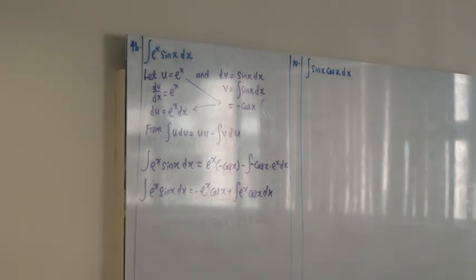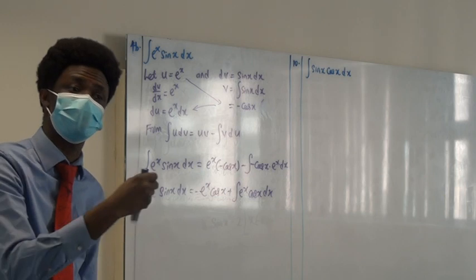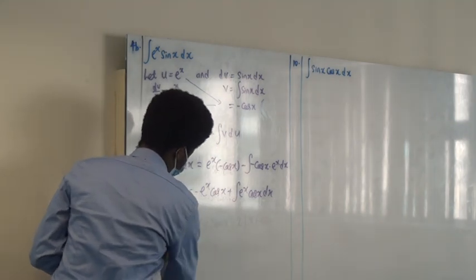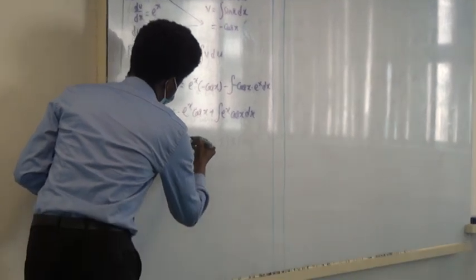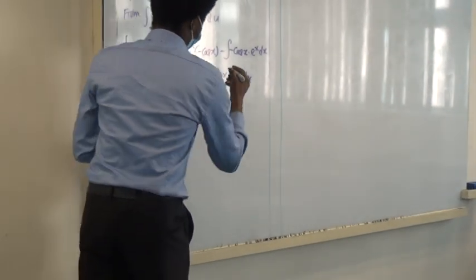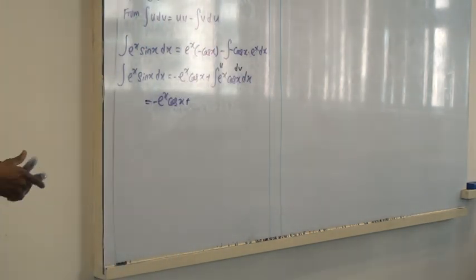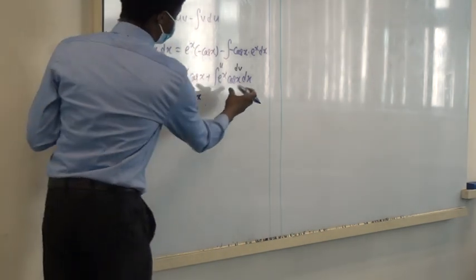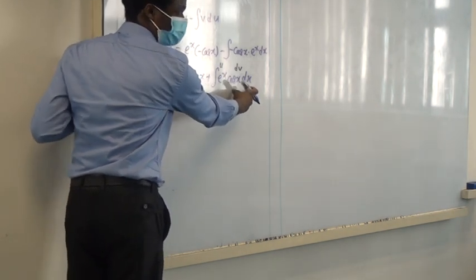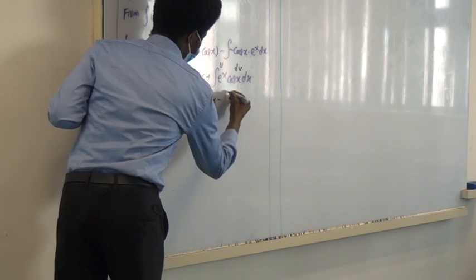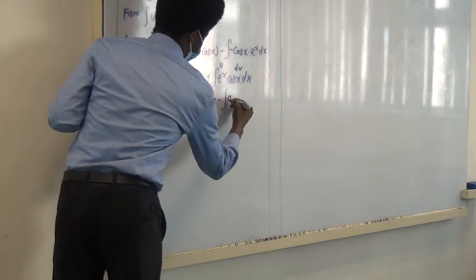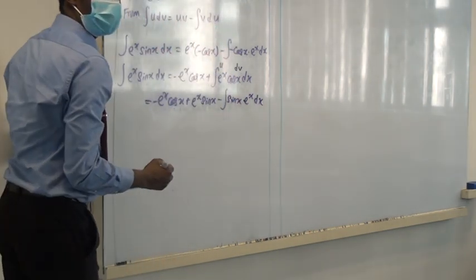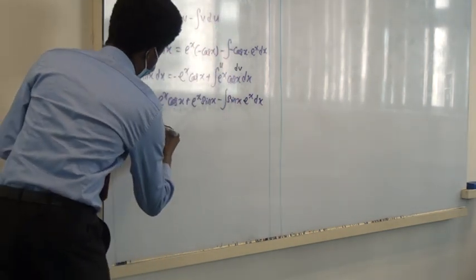Remember yesterday we did integration by parts twice because the algebraic part was x², so let's go one more time. Now for ∫eˣcos(x)dx, again let u = eˣ and dv = cos(x)dx. So uv gives eˣ·sin(x). The integral of cos(x) is sin(x), and du is still eˣdx. So this gives eˣ·sin(x) minus ∫sin(x)·eˣdx.